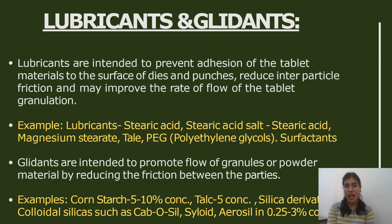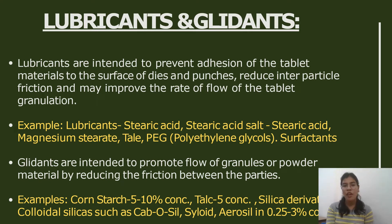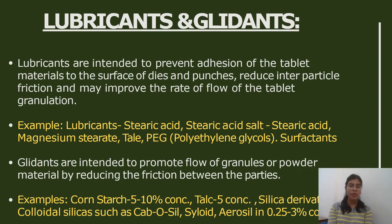The fourth class is lubricants and glidants. Lubricants are intended to prevent adhesion of the tablet material to the surface of the dies and punches. To reduce inter-particle friction and improve the rate of flow of the tablet granulation, lubricants are used. Examples of lubricants include stearic acid, stearic acid salts, talc, magnesium stearate, and some surfactants.